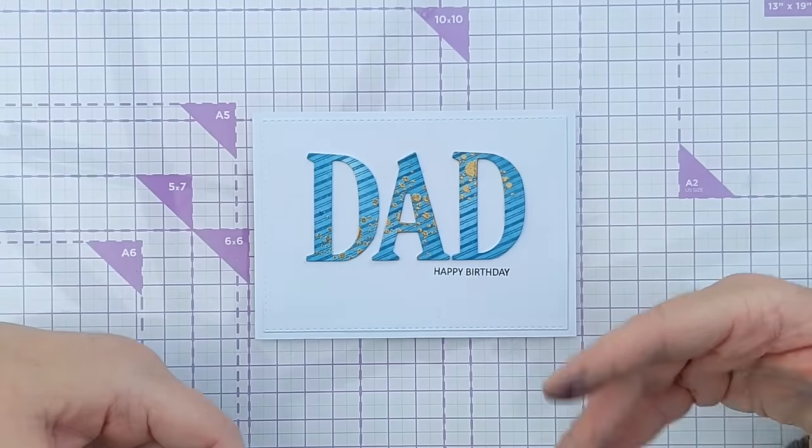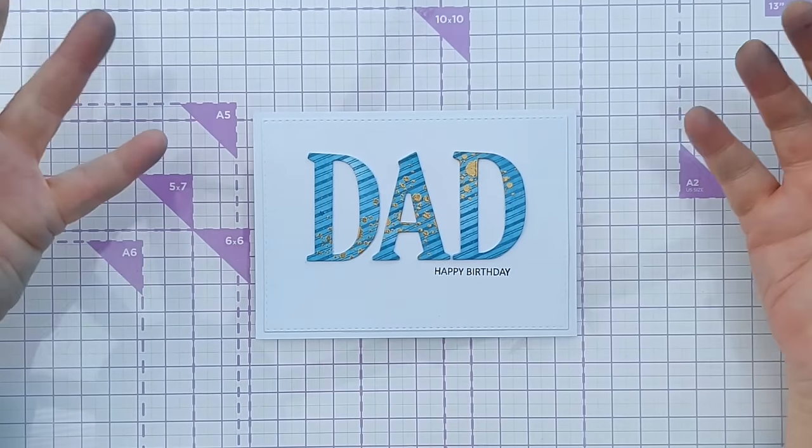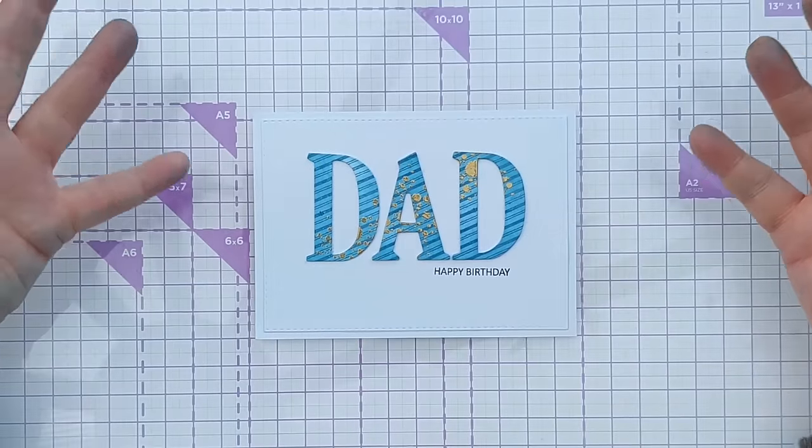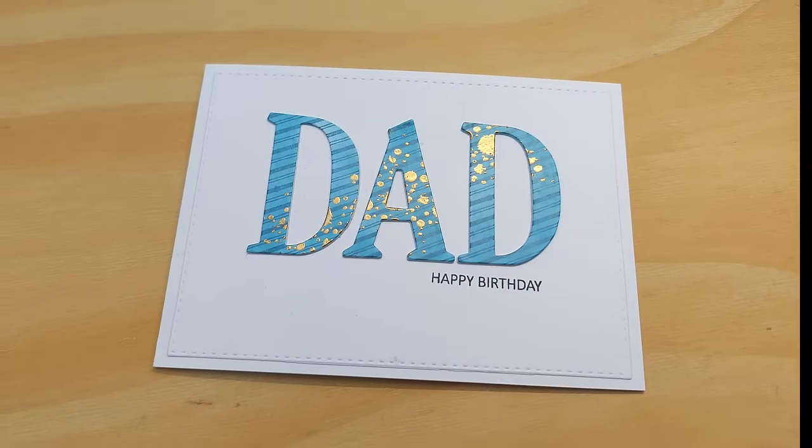And I'm going to add a happy birthday again in that capital letter font, again in black to make it stand out from the rest of the card. And there we have card number two. Of course you could make this card using any stamp patterns, any designs, and you could make it in a person's name. Doesn't have to be dad. But that's that one.